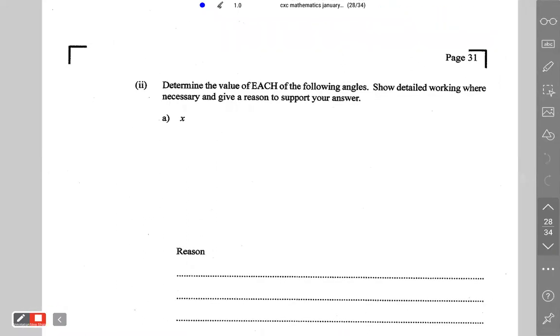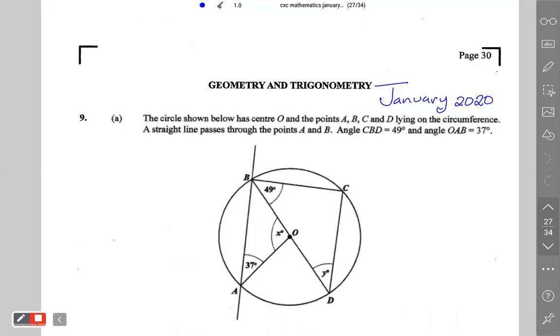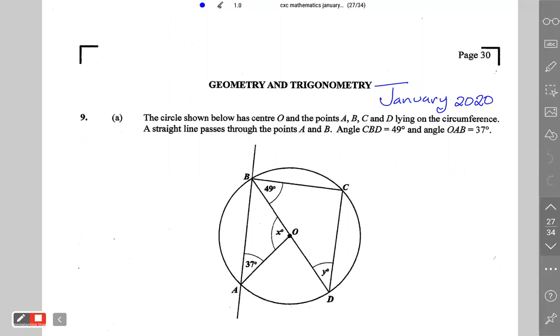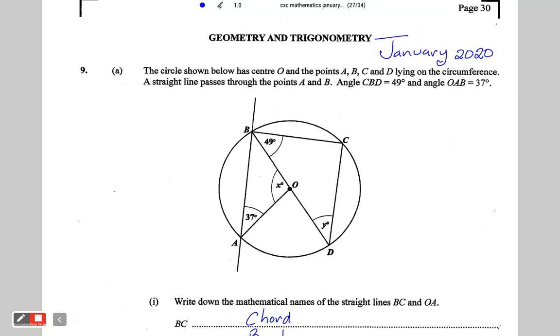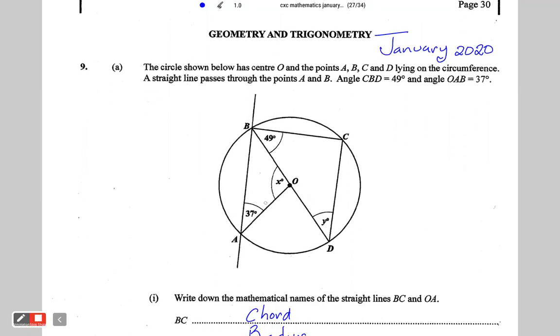Next, we're asked to determine the value of each of the following angles, show detail working where necessary and give a reason to support your answer. So the first angle we need to find is X. If you look carefully, you'll notice that OA is radius, already stated. OB is also a radius. Therefore, triangle OAB is an isosceles triangle.